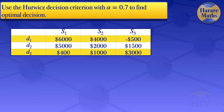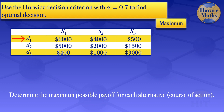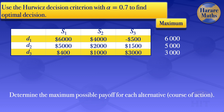The first step of the Hurwicz decision criterion is to determine the maximum pay-off for each of the decision alternatives. For decision 1, the maximum of 6,000, 4,000, and minus 500 is 6,000. For decision 2, the maximum of 5,000, 2,000, and 1,500 is 5,000. For decision 3, the maximum of 400, 1,000, and 3,000 is 3,000.